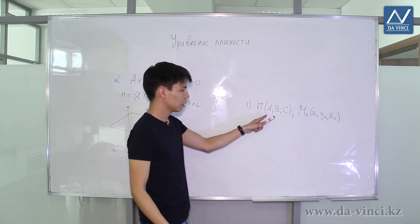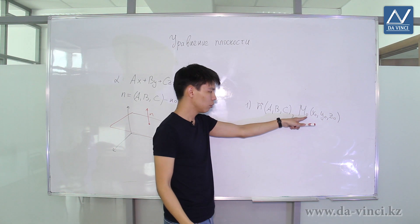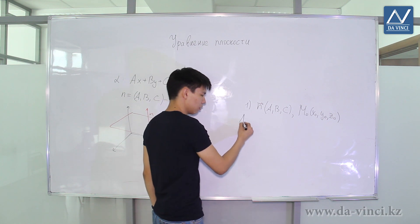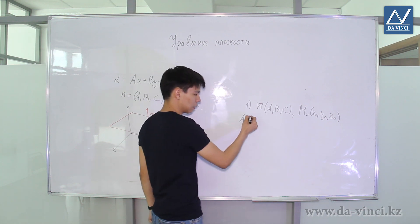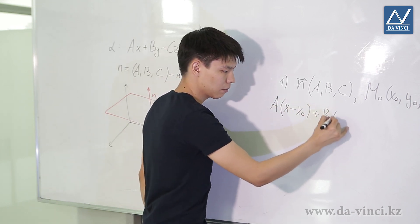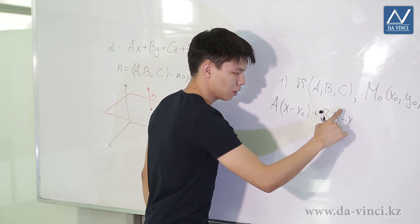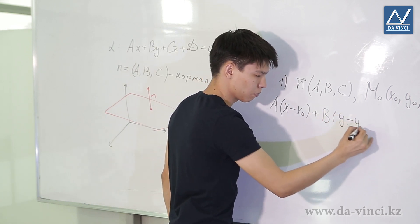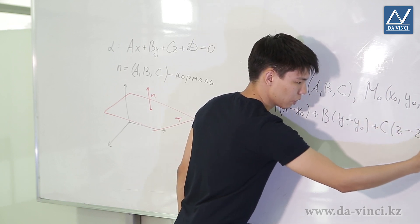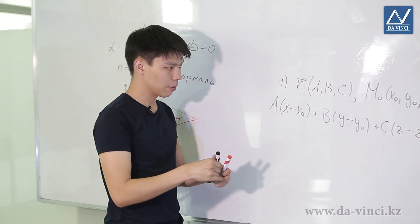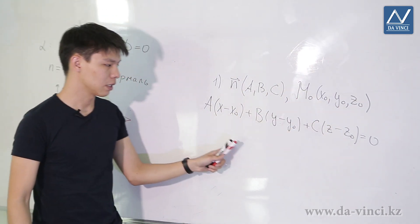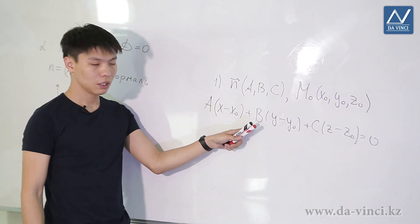Let's assume that we need to draw a plane through a given point M0. Moreover, this plane should be perpendicular to the normal. Then we can calculate the equation of the plane as follows: A times (x minus x0) plus B times (y minus y0) plus C times (z minus z0) is equal to 0. Thus, if we know the normal of the plane and some point that lies in this plane, then we can draw up its equation. We can transform this ratio and bring it to the general form.